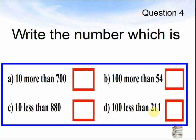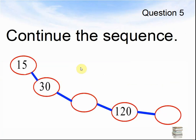Here comes question 5. Continue the sequence: 15, 30, something, 120, something. What are the two missing numbers? Pause the video until you are ready for question 6.